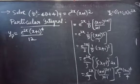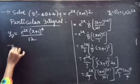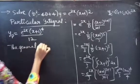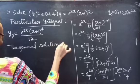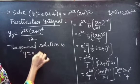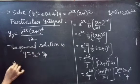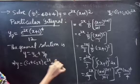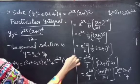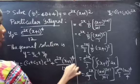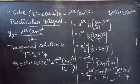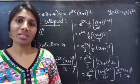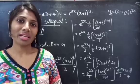We have found YC and YP, so we can write the general solution. The general solution is Y equals YC plus YP, which gives Y equals C1 plus C2X into E power 2X plus E power 2X into X plus 1 whole power 4 by 12. This completes the problem. We have seen a problem from higher order linear differential equations in this video. Hope you understand. See you in the next video. Bye bye.